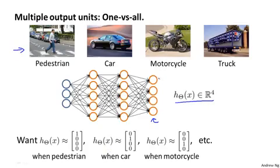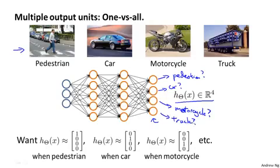And what we're going to try to do is get the first output unit to classify: is the image a pedestrian, yes or no? The second unit to classify: is the image a car, yes or no? This unit to classify: is the image a motorcycle, yes or no? And this to classify: is the image a truck, yes or no?